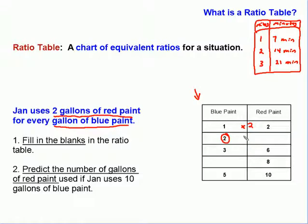1 times 2 is 2. Does that hold true for the other ones? Yes, to get 3 gallons of blue paint, we multiply that by 2 to get the gallons of red paint. And did we do the same thing here for 5 and 10? Yes, we did. So all of these are being multiplied by 2. What are we going to do to get the number of gallons of red paint for 2 gallons of blue paint? We're going to multiply by 2 and we'll get 4.